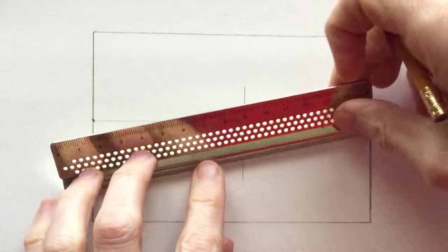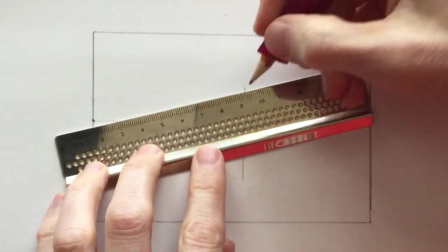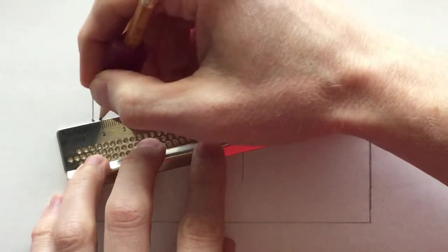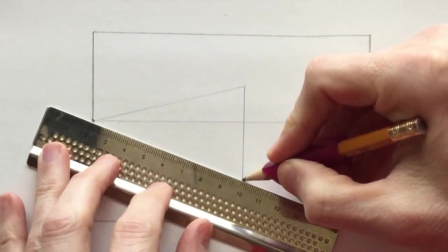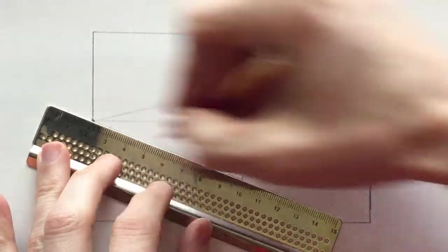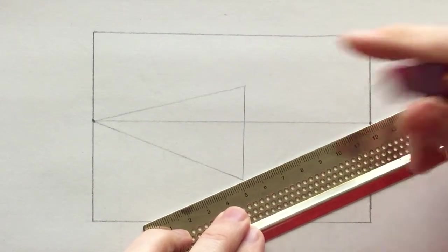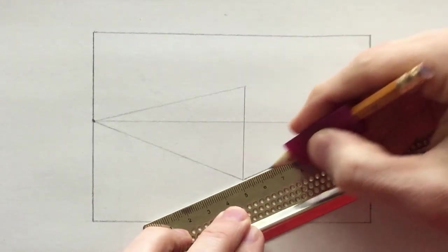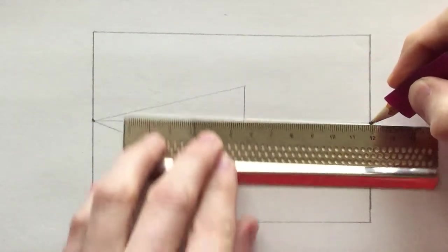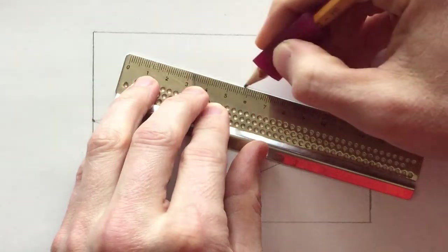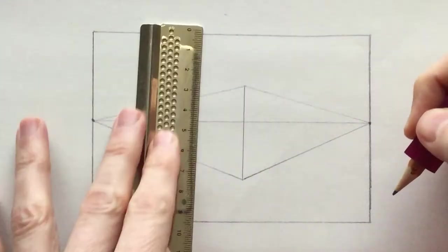We're going to draw from the top and bottom of that structure to each of the vanishing points a line which is diagonal, and that will create our kite or diamond shape from the last video. All lines left to right are going to go to a vanishing point. All lines that are up and down are going to stay straight.